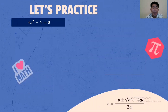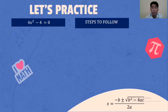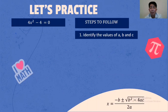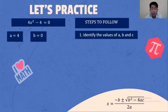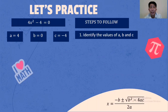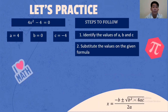Next example: 4X squared minus 4 equals 0. Steps to follow. Number 1, identify the values of A, B, and C. The value of A is 4. There is no value for B, so B equals 0. The value of C is negative 4.